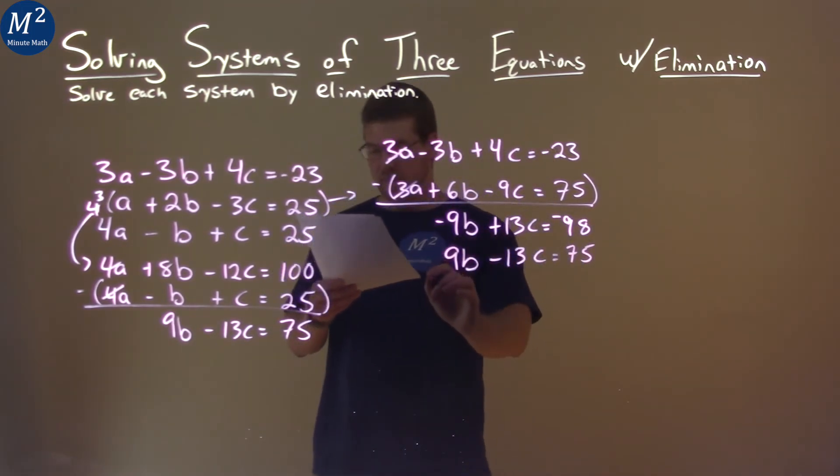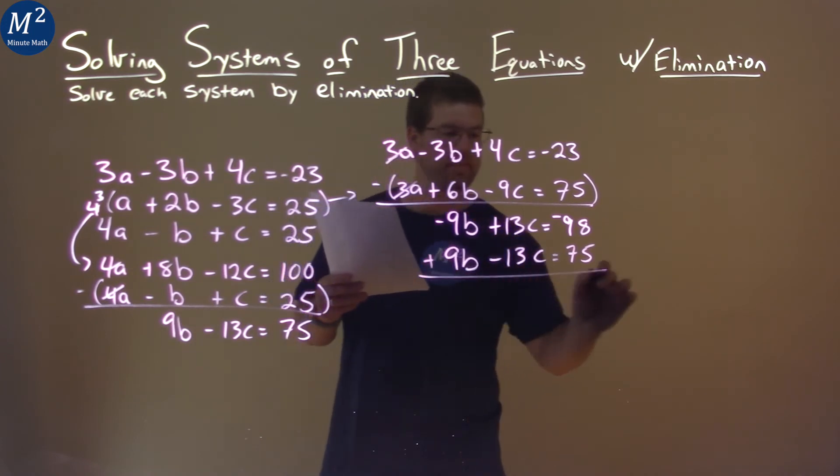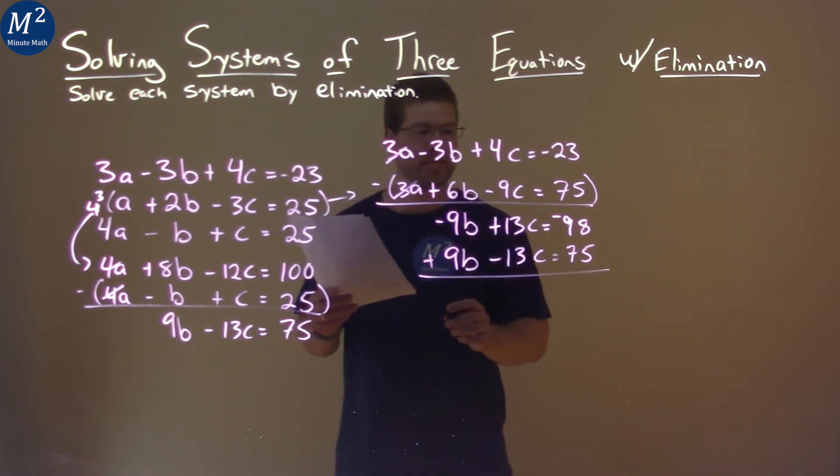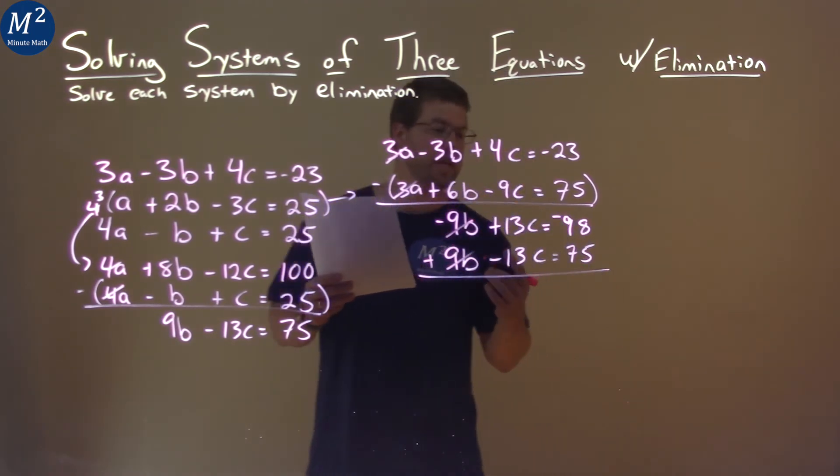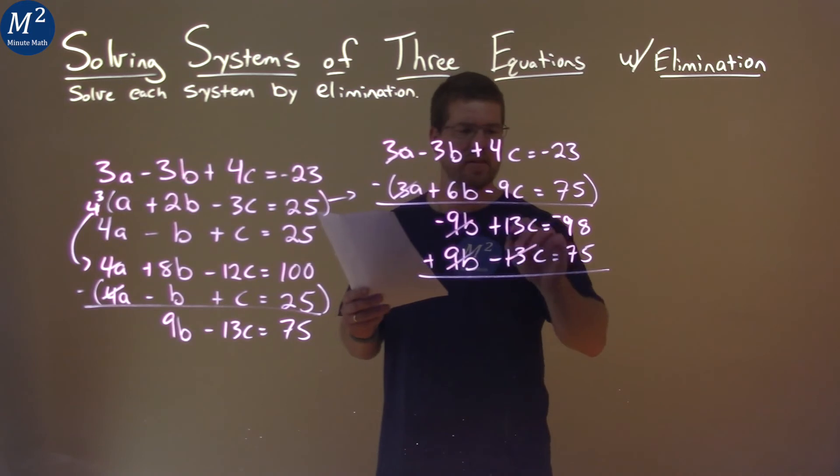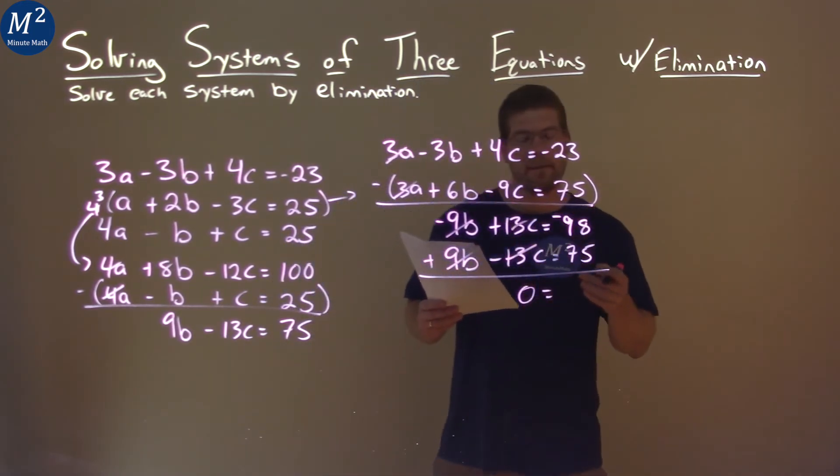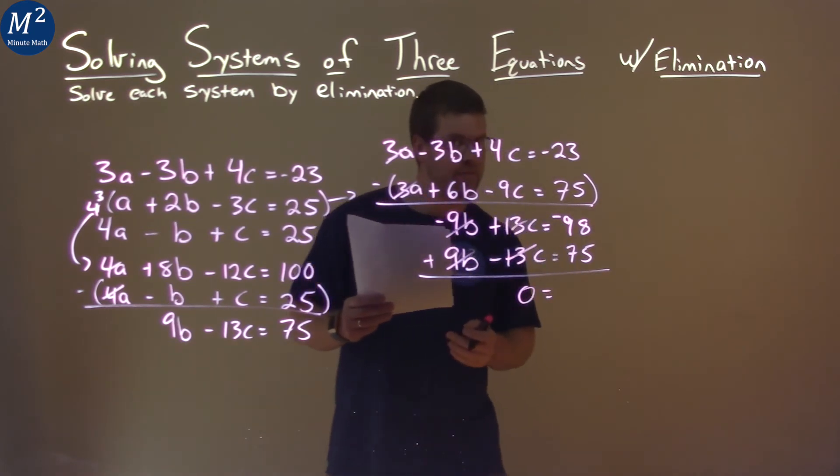So now let's add these two equations together. Negative 9B plus 9B, well, it's 0B. 13C minus 13C, again, is zero. Negative 98 plus 75, hmm, how does that go?